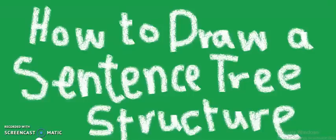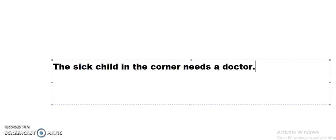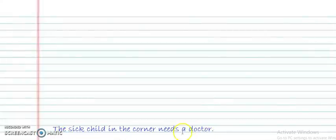Hello everyone and welcome to our new lesson: how to draw a sentence tree structure. Let's say we have this sentence: 'The sick child in the corner needs a doctor,' and we want to draw a tree structure for it. The first thing we have to do is bring a blank page and write the sentence at the bottom so we can draw the tree right above it.